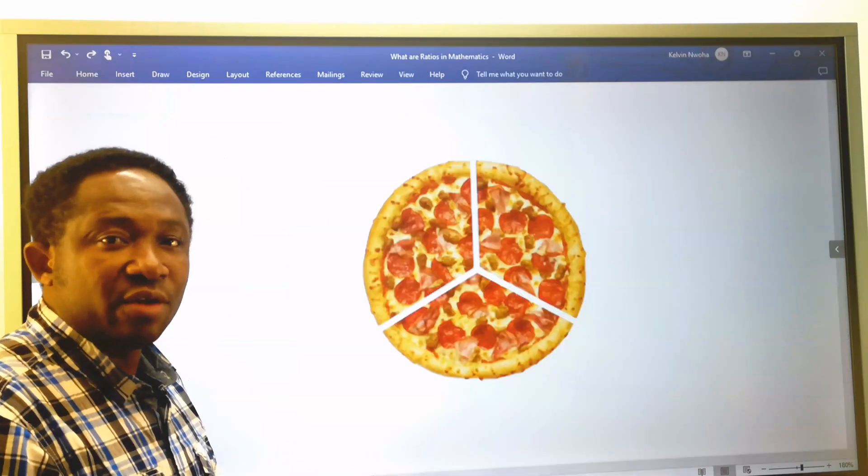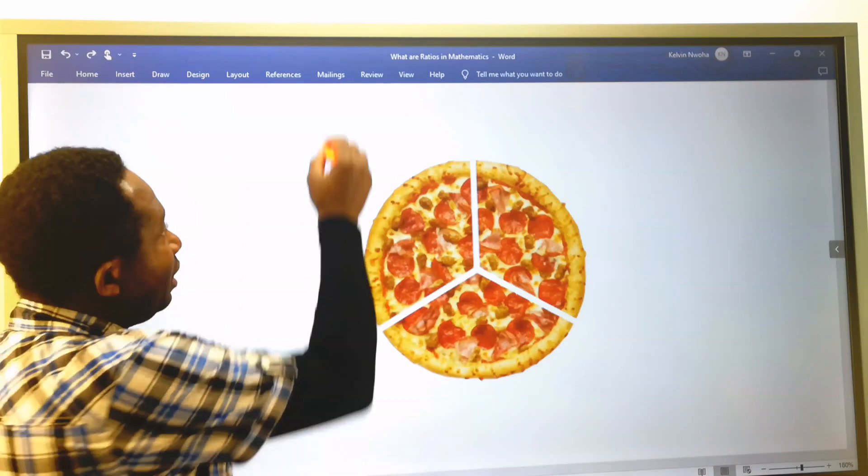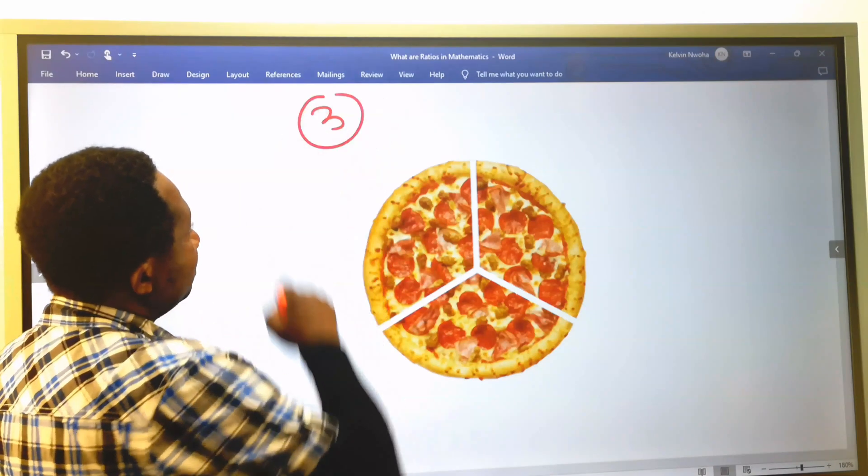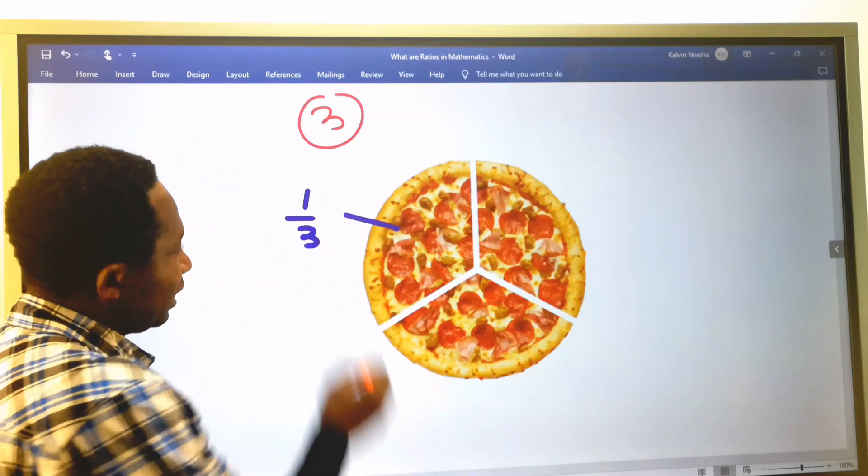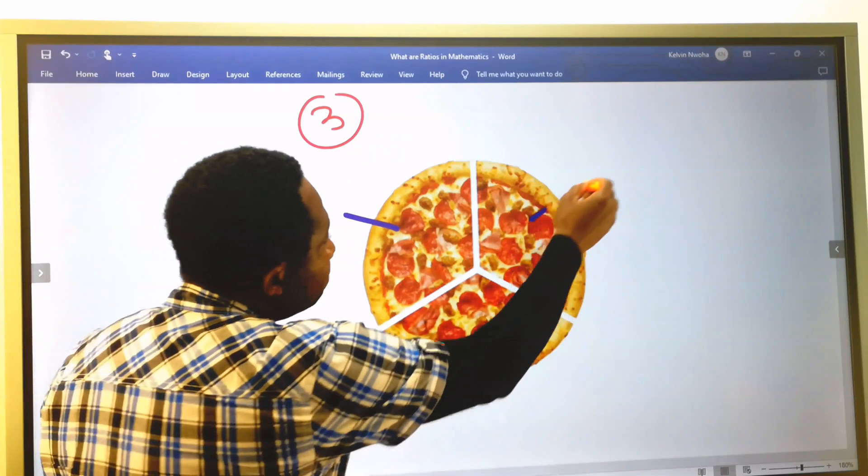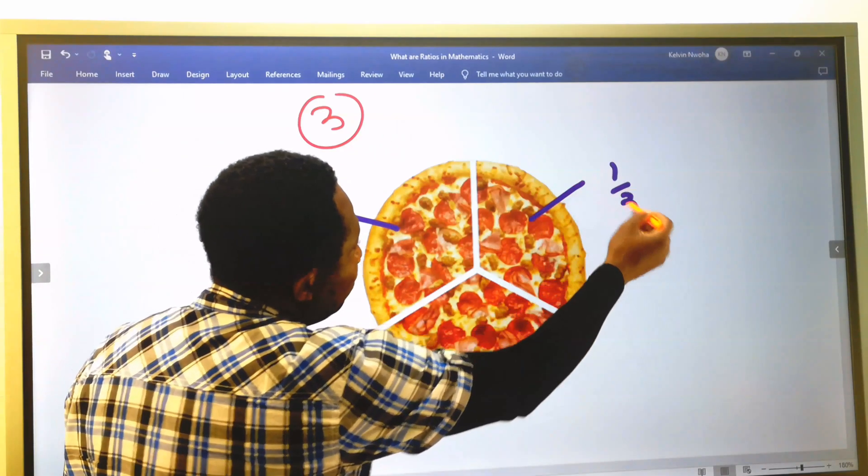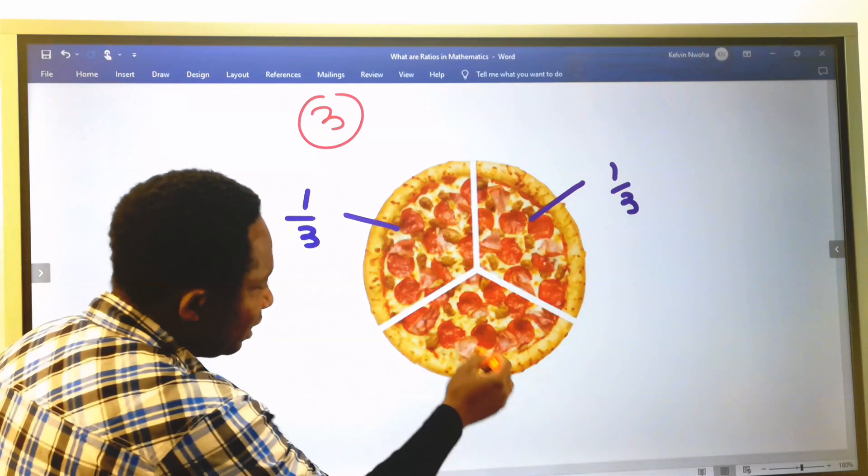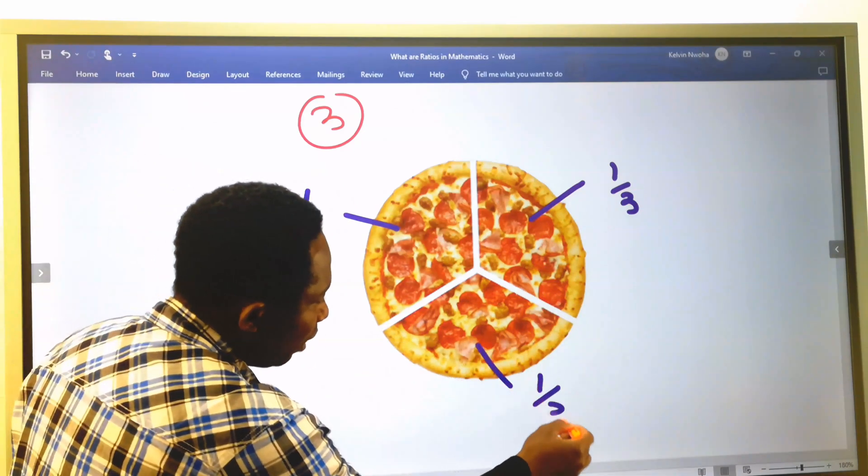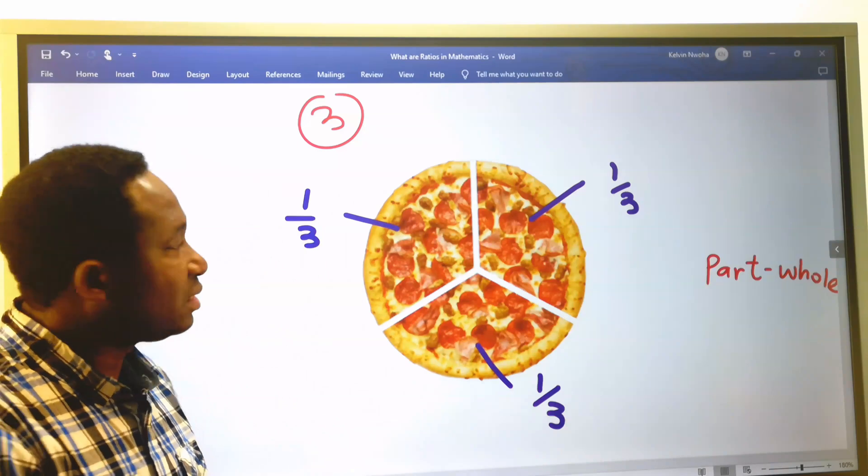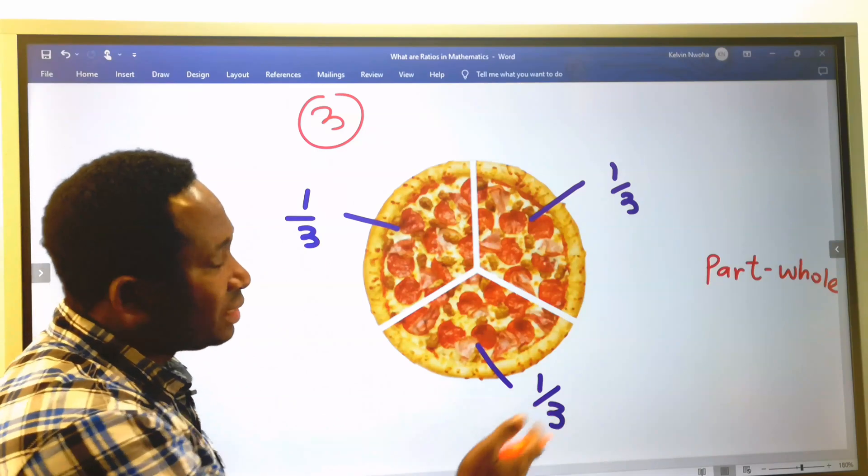Next, if we slice this pizza into 3 parts, each part is 1 over 3, and this part is 1 over 3. Likewise, this part is 1 over 3, and this is considered as part to whole.